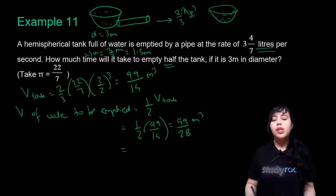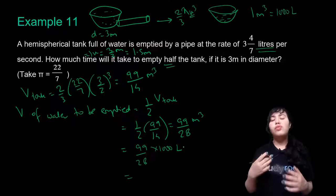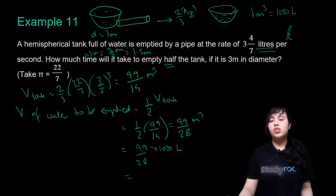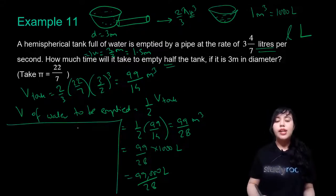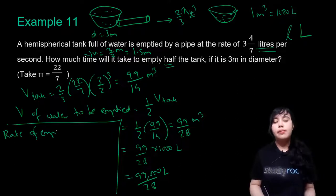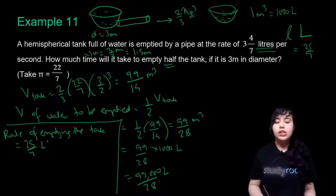The rate of emptying is given as a mixed fraction: 3 and 4/7 liters per second = (3×7+4)/7 = 25/7 liters per second. So 25/7 liters of water is emptied in one second. We need to find how long it takes to empty 99,000/28 liters.